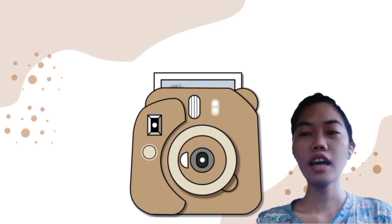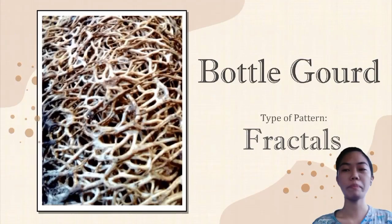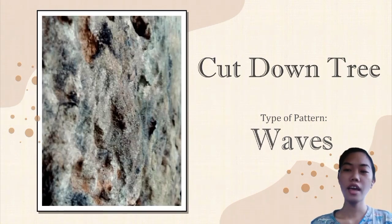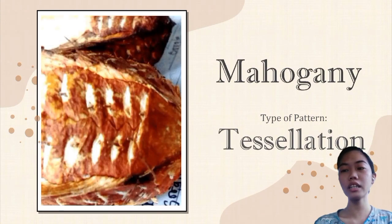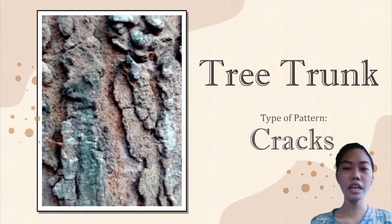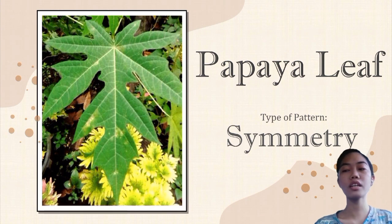Good day, my name is Louisa Basinal and I will be presenting my five photographs. First is the dried bottle gourd, which is an example of a fractals pattern, then followed by the cut-down tree, which is an example of a waves pattern, then a mahogany, which is an example of a tessellation pattern. Next is a tree trunk, which is an example of a crack pattern, and lastly, a papaya leaf, which is an example of bilateral symmetry pattern.